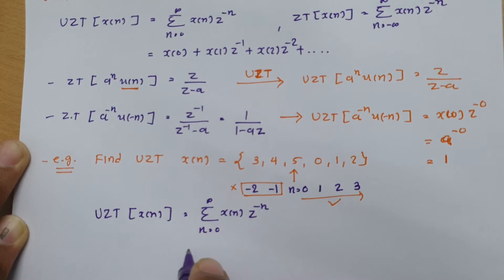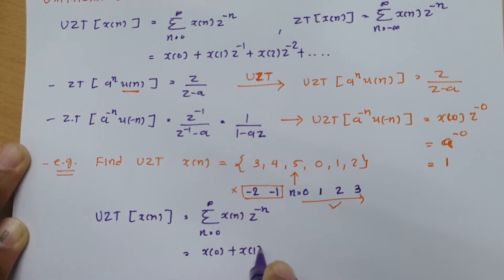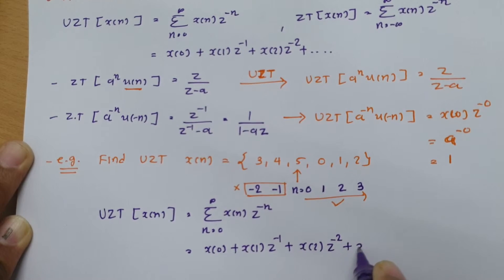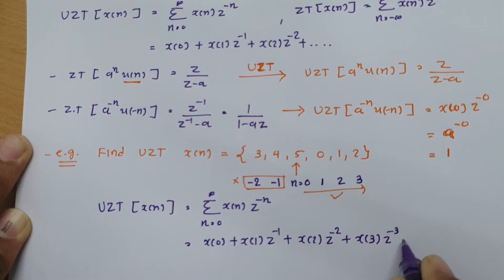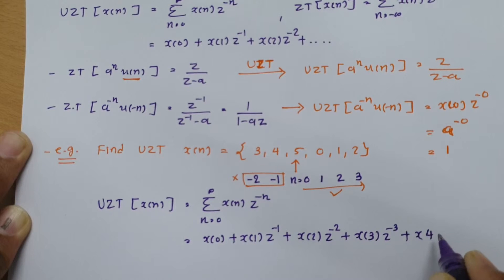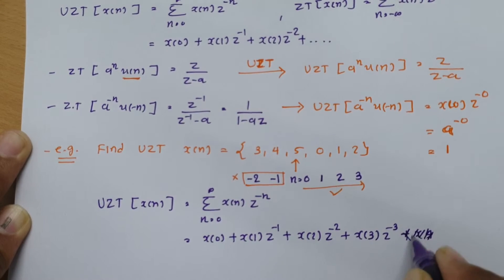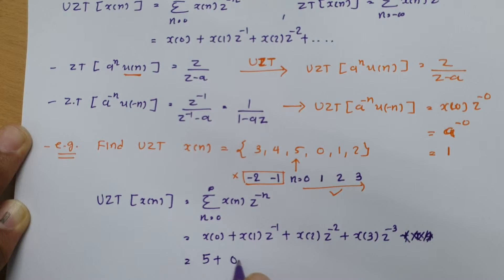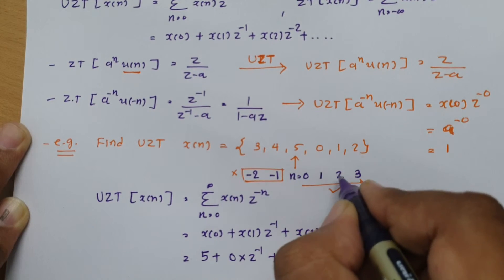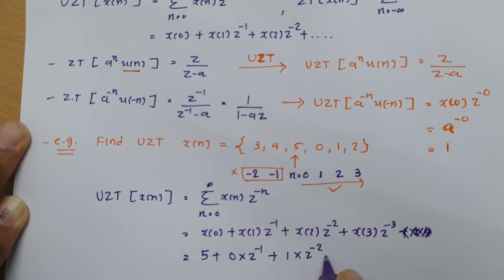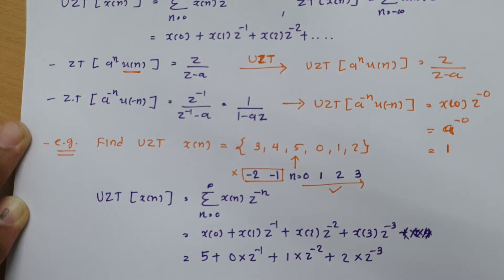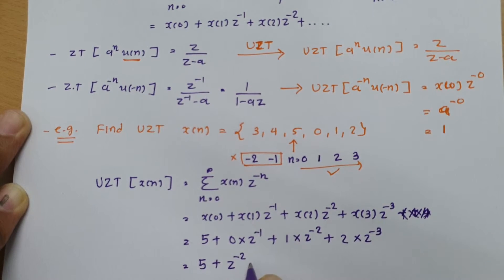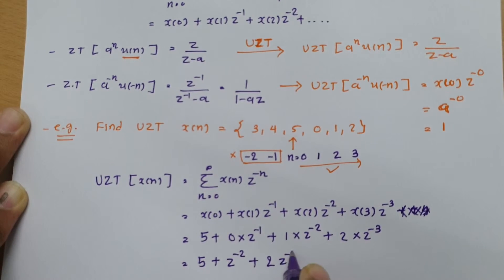The unilateral Z-transform expands as: x(0) + x(1)*z^(-1) + x(2)*z^(-2) + x(3)*z^(-3). Substituting: x(0) = 5, x(1) = 0, x(2) = 1, x(3) = 2. This gives: 5 + 0*z^(-1) + 1*z^(-2) + 2*z^(-3), which simplifies to 5 + z^(-2) + 2z^(-3).